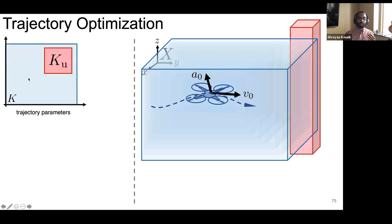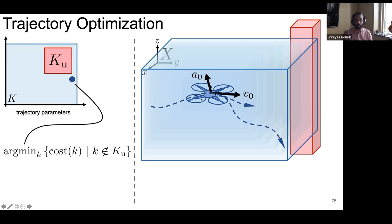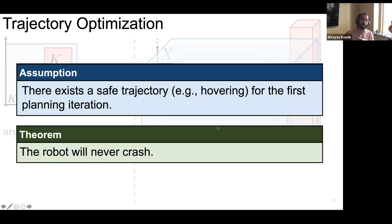One trajectory optimization iteration: the drone is flying along a trajectory with initial acceleration and velocity, and the goal is to decide its next desired velocity. We solve a program minimizing an arbitrary cost subject to not being in the unsafe set — a feasible solution is certainly not in collision for the simplified model plus tracking error. Because each trajectory ends in a stopping maneuver, if we assume there exists a safe trajectory for the first planning iteration, the robot will never crash. This is the big takeaway: we've gone from a complex high-fidelity model through reachability analysis to enable strict safety guarantees for runtime trajectory optimization.